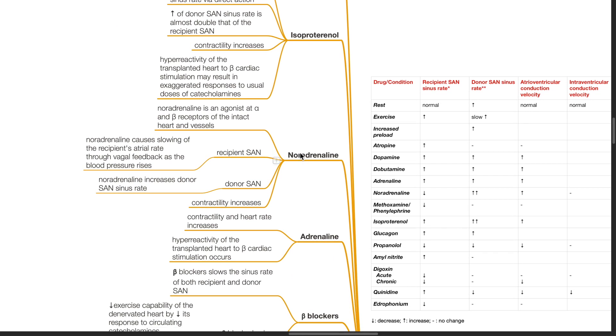Noradrenaline is an agonist at the alpha and beta receptors of the intact heart and vessels. At the recipient's sinoatrial node, noradrenaline causes slowing of the recipient's atrial rate through vagal feedback as blood pressure rises. Noradrenaline increases the donor sinus rate. Contractility increases.